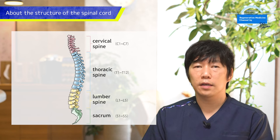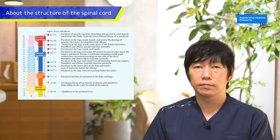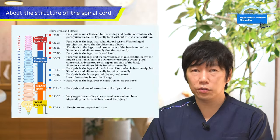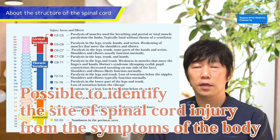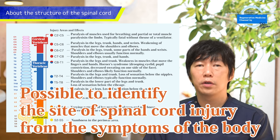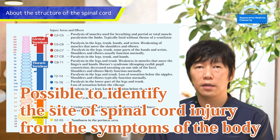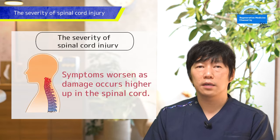Many nerves branch out from the spinal cord and pass through it to various parts of the body. By tracing back in reverse to identify which part of the body has become immobile or damaged, you can determine the location of the spinal cord injury.